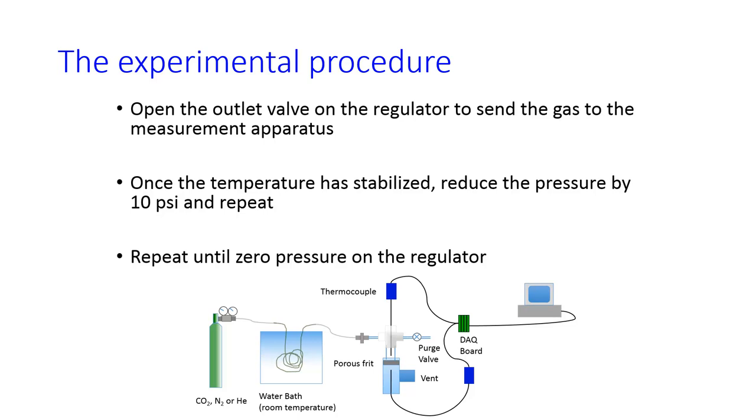Once that temperature has stabilized, it's going to plot them as it goes. Once it's stabilized, reduce the pressure by 10 psi and repeat until the lowest pressure that the manual tells you to use for that gas.